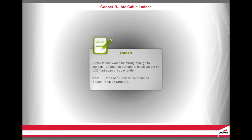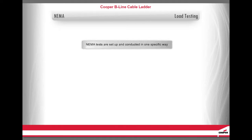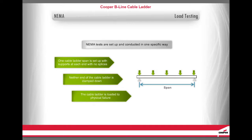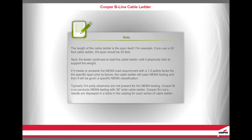Note: NEMA load class is the same as straight section strength. The NEMA tests are set up and conducted in one specific way. One cable ladder span is set up with supports at each end with no splices. Neither end of the cable ladder is clamped down. The cable ladder is loaded to physical failure. The length of the cable ladder is the span itself — for example, if you use a 20-foot cable ladder, the span would be 20 feet. The tester continues to load the cable ladder until it physically fails to support the weight. If it meets or exceeds the NEMA load requirement with a 1.5 safety factor for the specific span prior to failure, the cable ladder will pass NEMA testing and be given a specific NEMA classification.